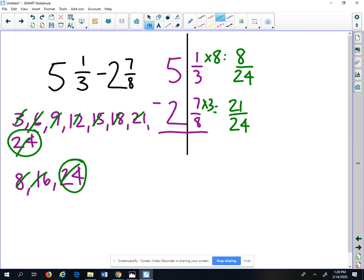The new fractions are 8/24 and 21/24. We can't subtract 21 from 8, so we need to borrow from the whole number 5, reduce the 5 to 4, and add one whole to 8/24 by making it 32/24.